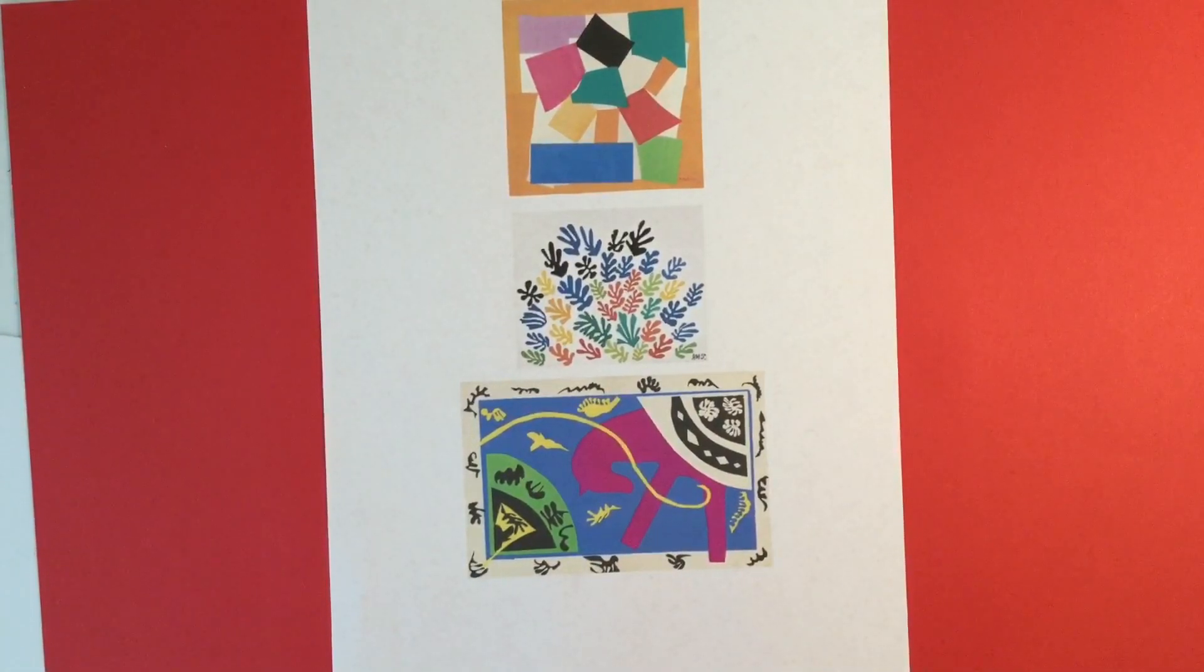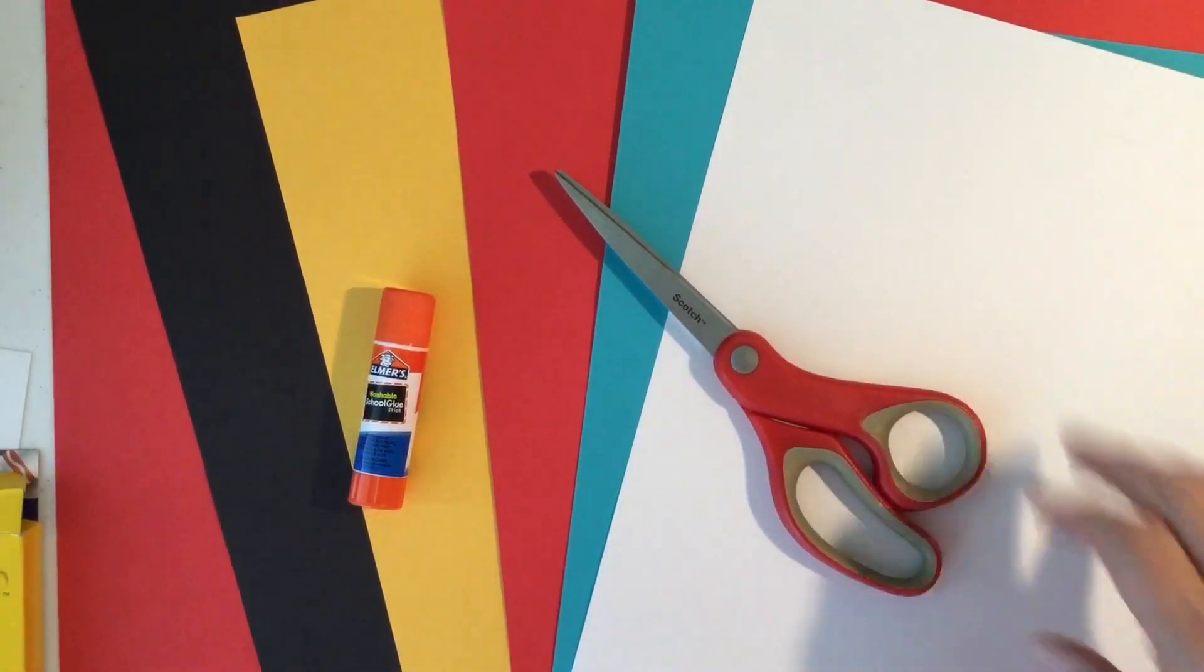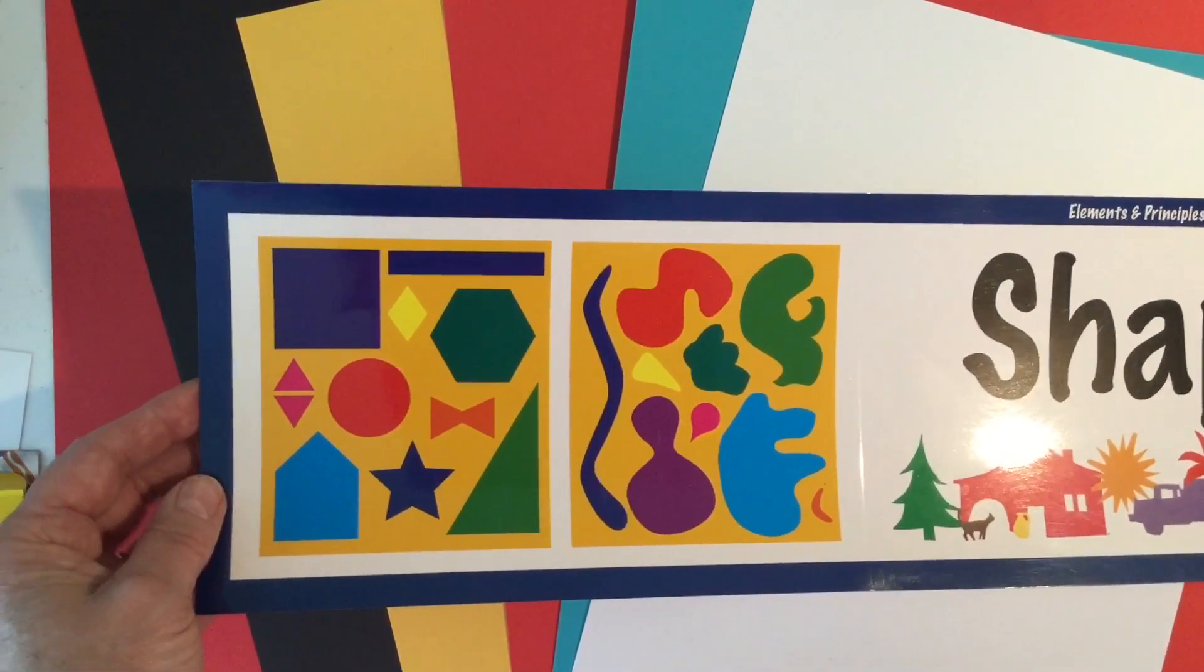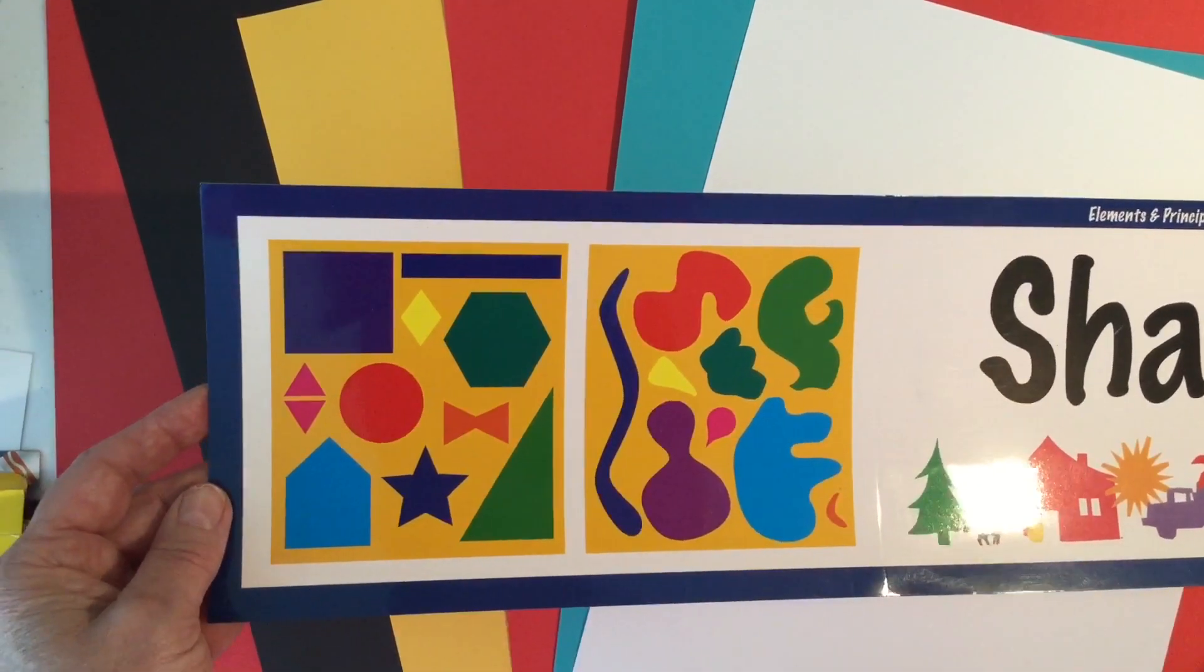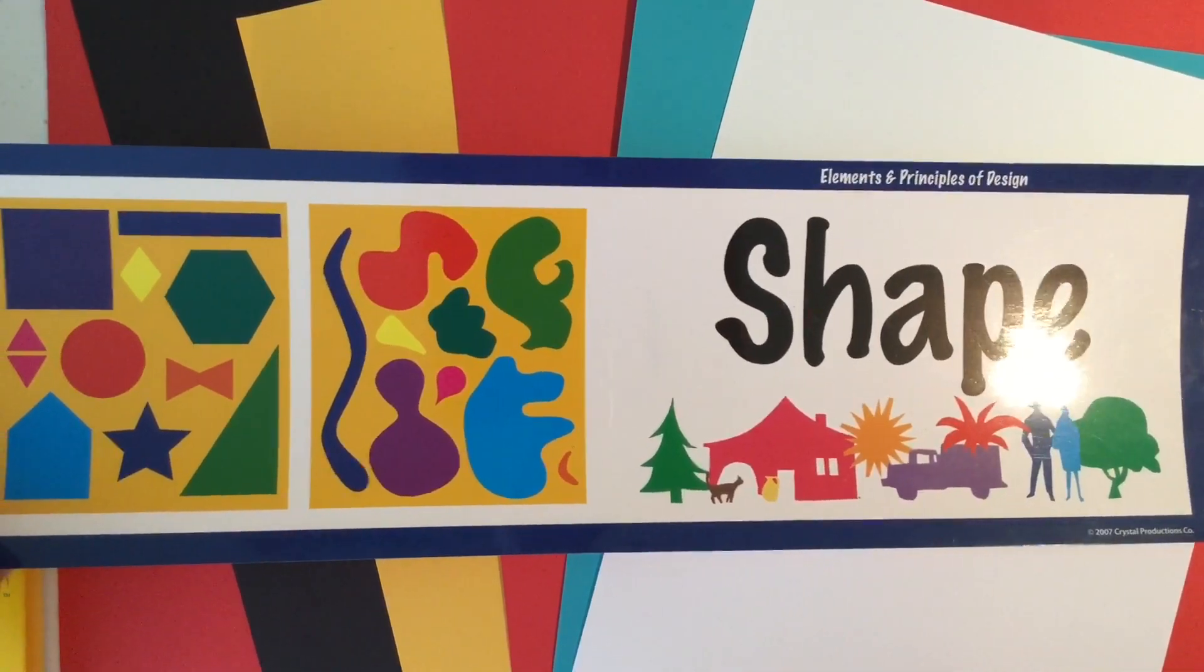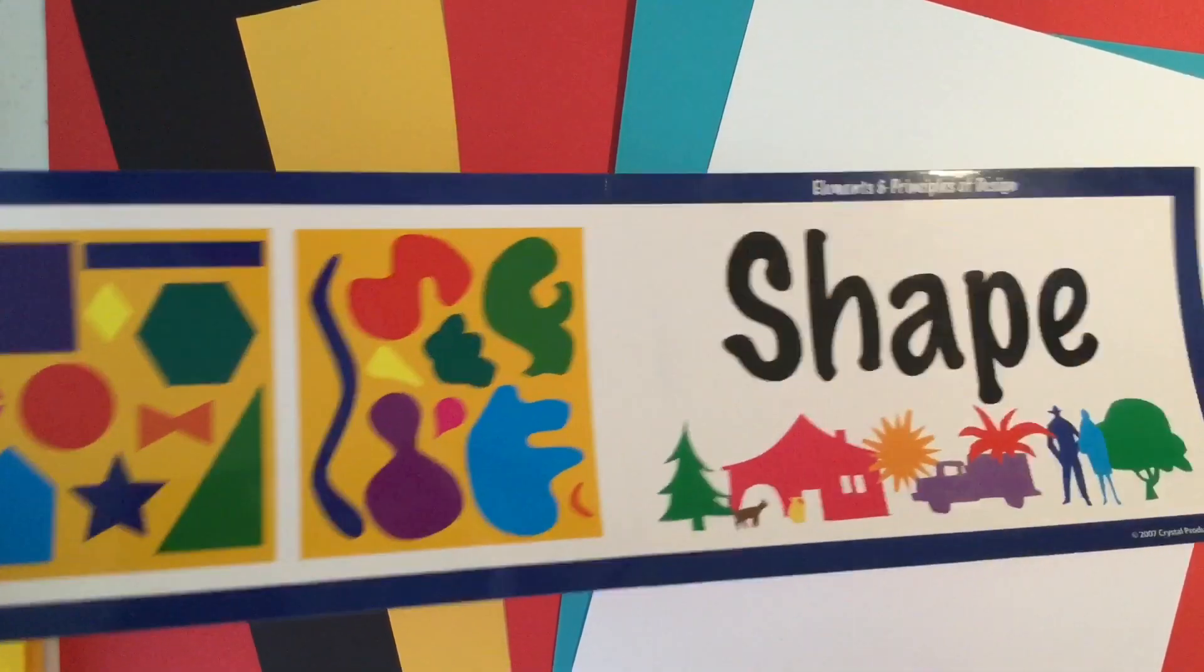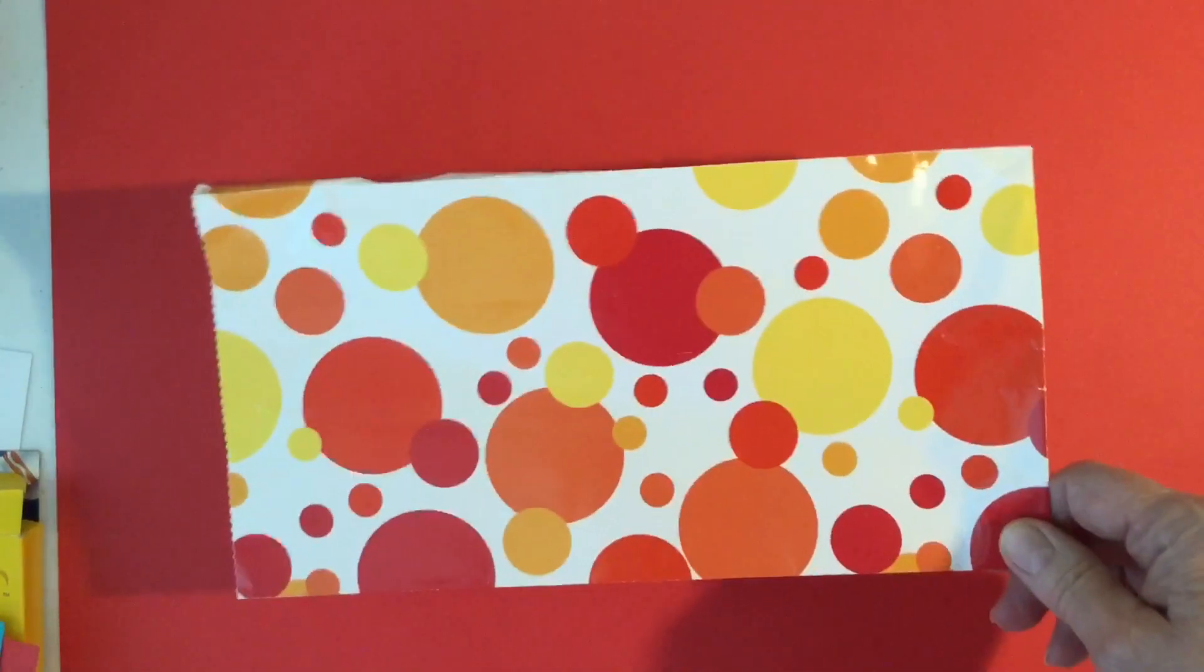All right everybody, are we ready? Let's make art. The materials are simple. We will be using scissors to cut out simple shapes. Shapes can be geometric or they can be freeform. I think you saw a lot of freeform shapes in Matisse's art. If you don't have colored construction paper, you can use gift wrap or you can make your own colored paper.